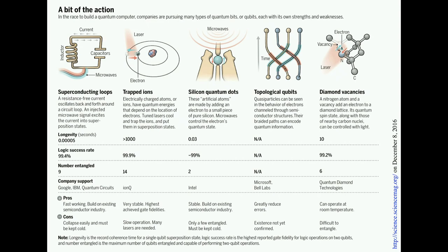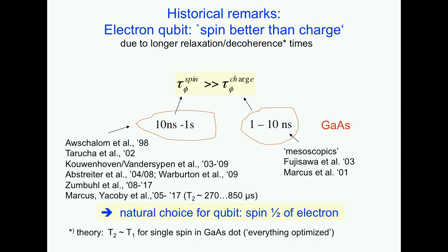These numbers get outdated very quickly. For example, fidelity has now also been improved in some structures. In topological qubits, we don't even know whether we have a qubit or not, let alone knowledge about decoherence time and so forth, but it might come at some point.